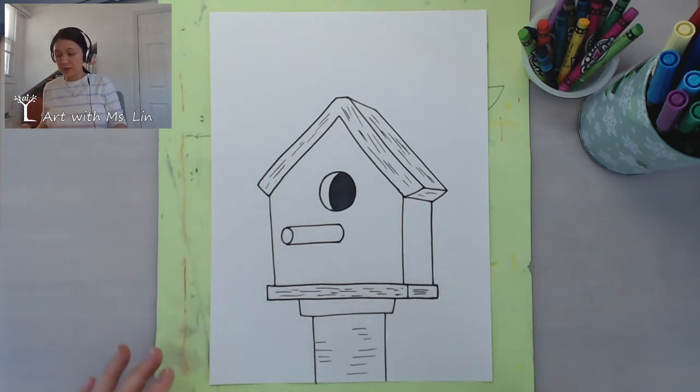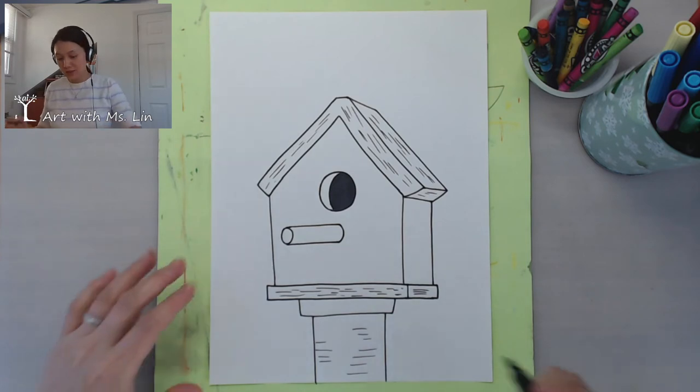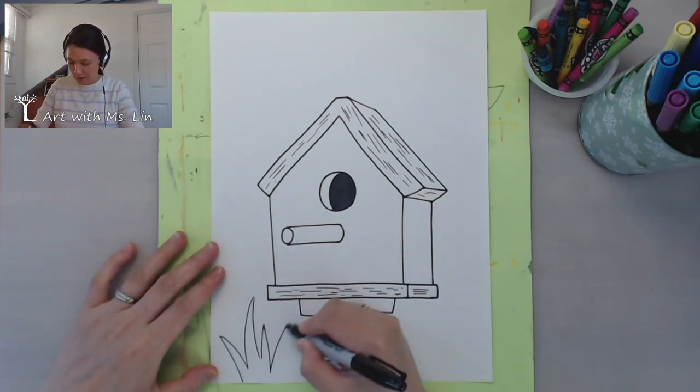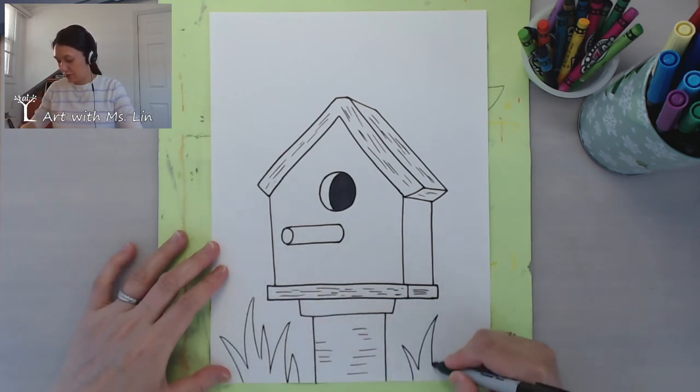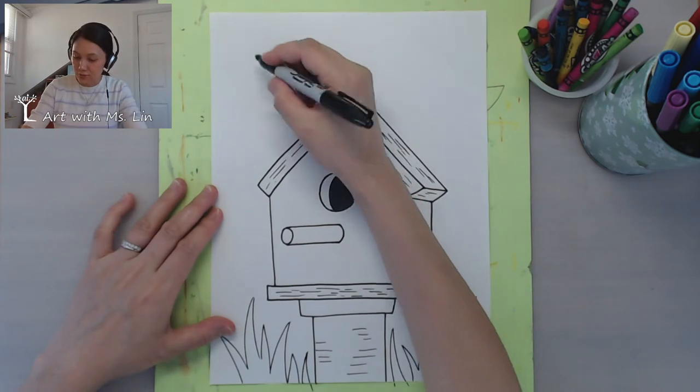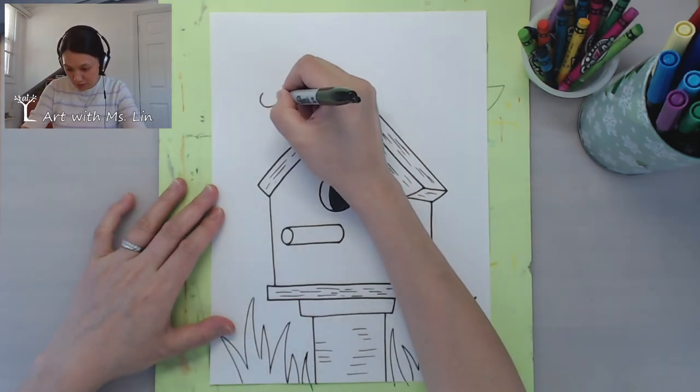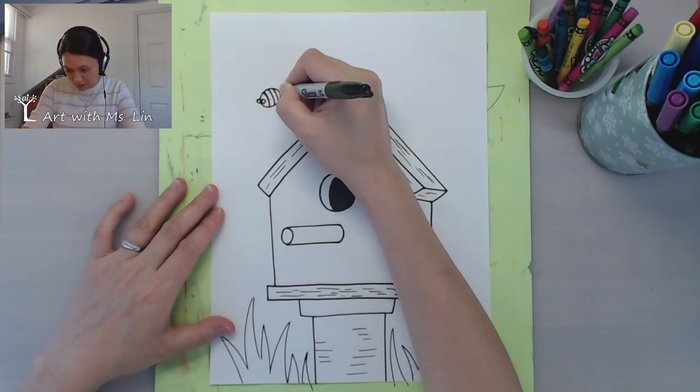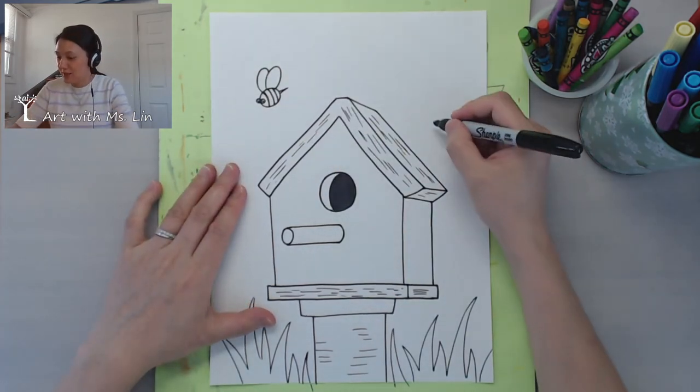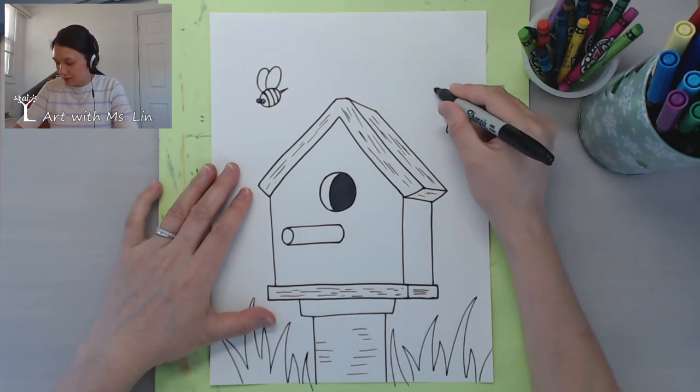And then you can think about background. For example, garden things, grass, flowers, right? Maybe some insects. So for example, bees or butterflies or even draw the bird itself. Here we have a bee. You can sketch out butterflies.